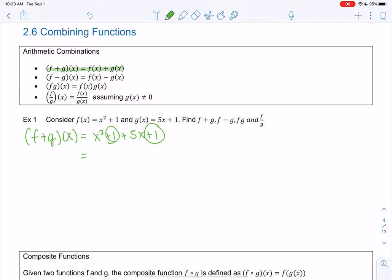I see we have like terms of 1 and 1. So it's x squared plus 5x plus 2 would be my f plus g function. I think adding is pretty straightforward. You just add the two functions and combine any like terms.